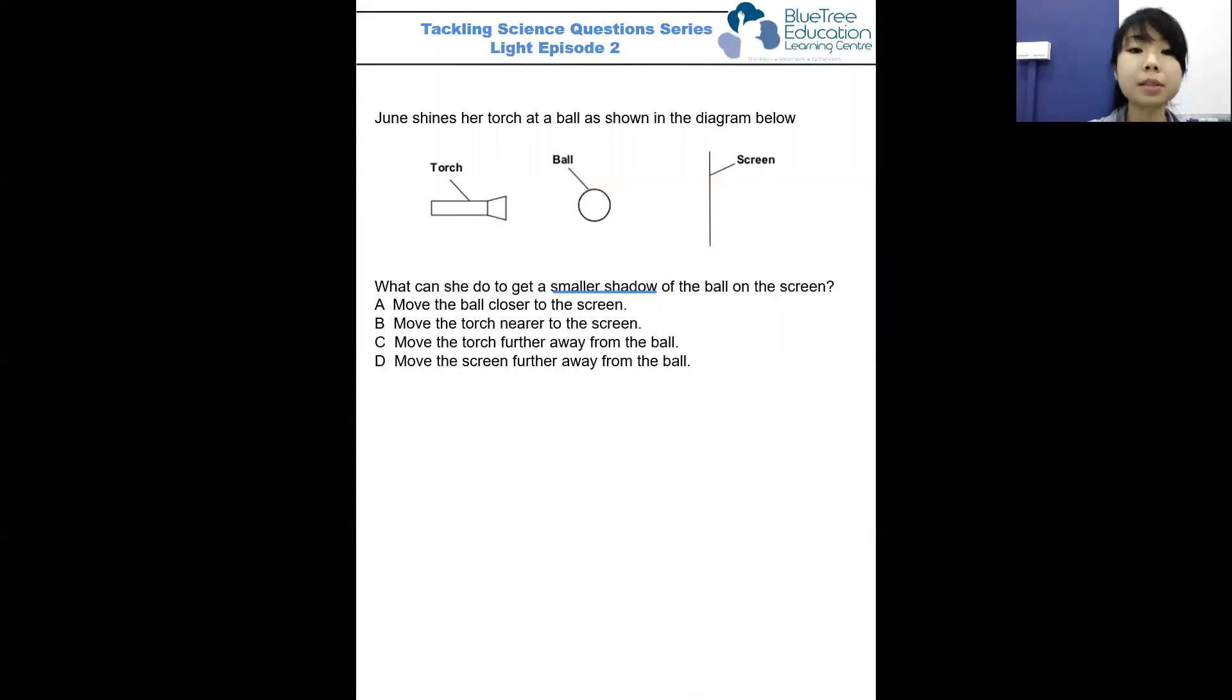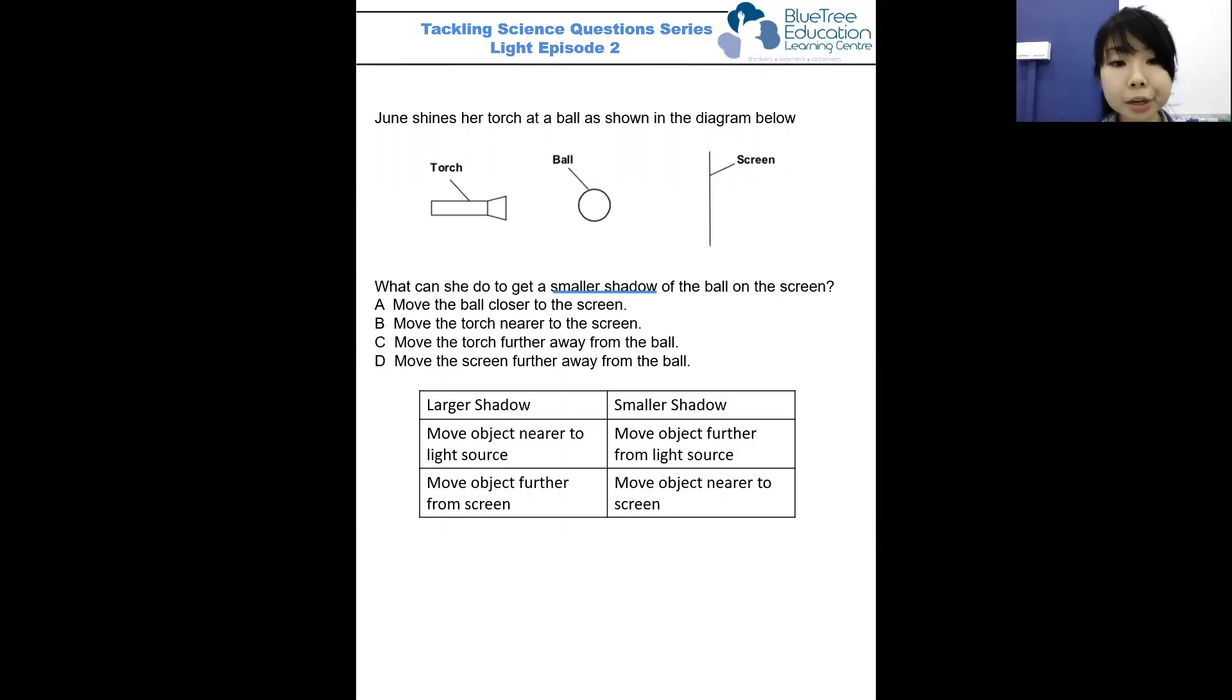To summarize what we have seen in the drawings: larger shadow - move object nearer to the light source or move the object further from the screen. Smaller shadow - move the object further from the light source or move the object closer to the screen.